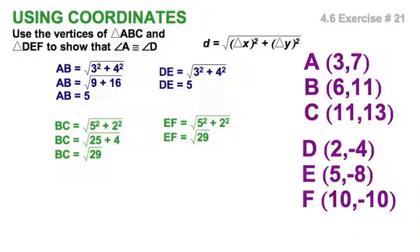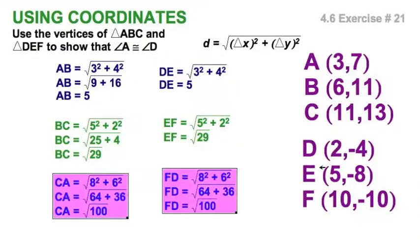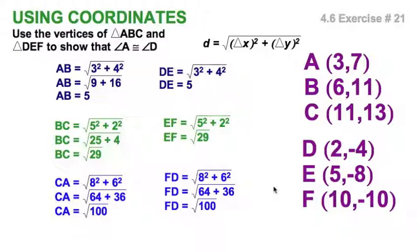And I'll let you do the next one yourselves, and clearly CA and FD. A square root of a hundred, we all know that's going to be ten in the principal root.